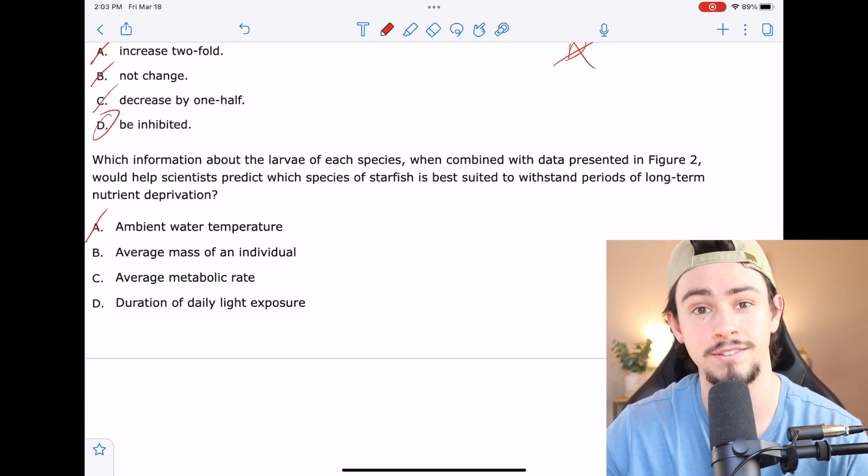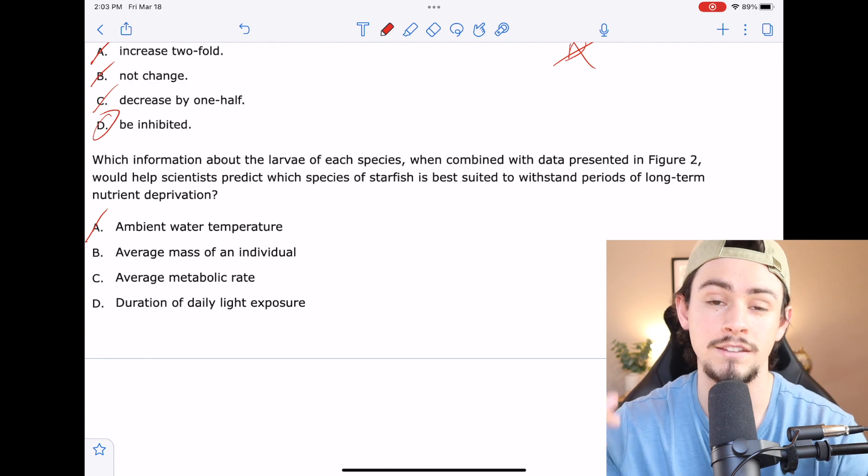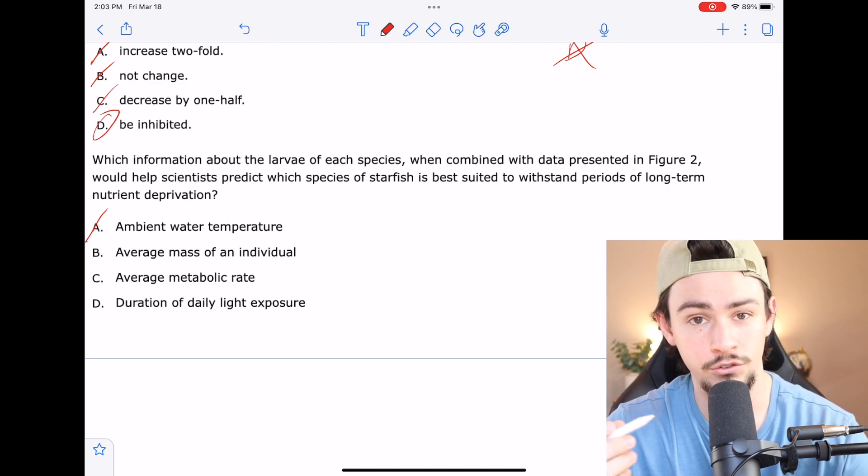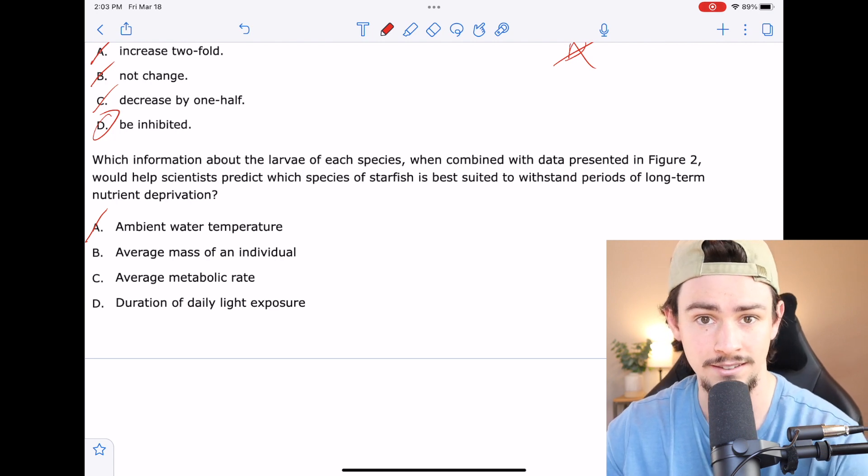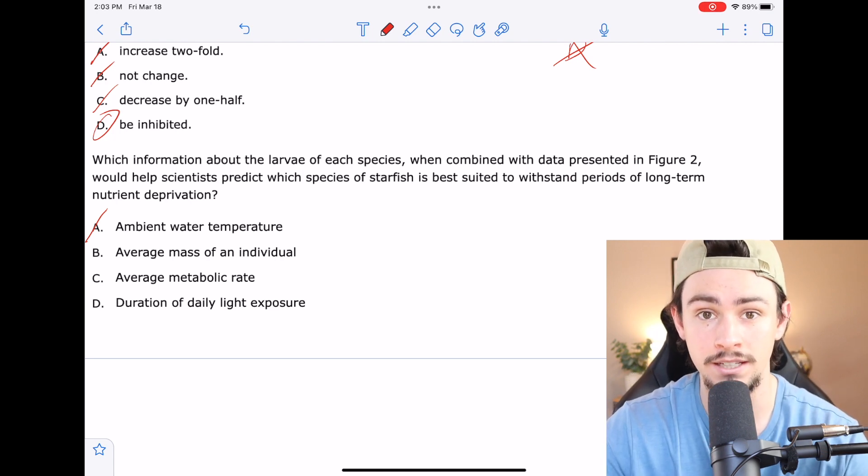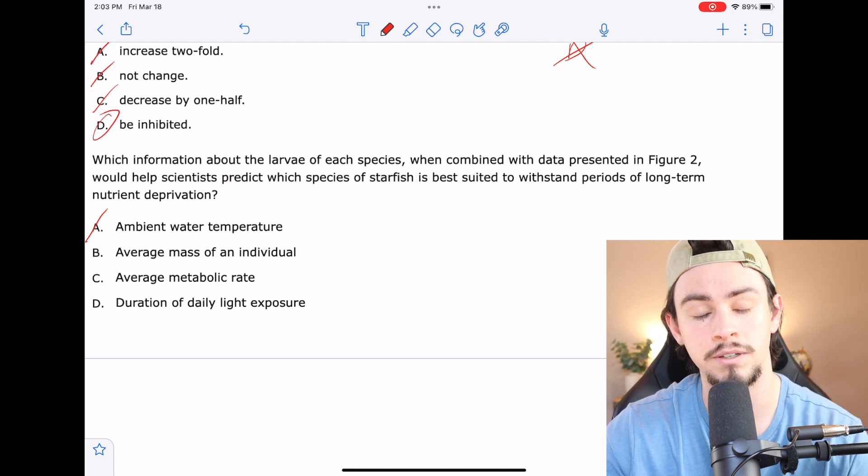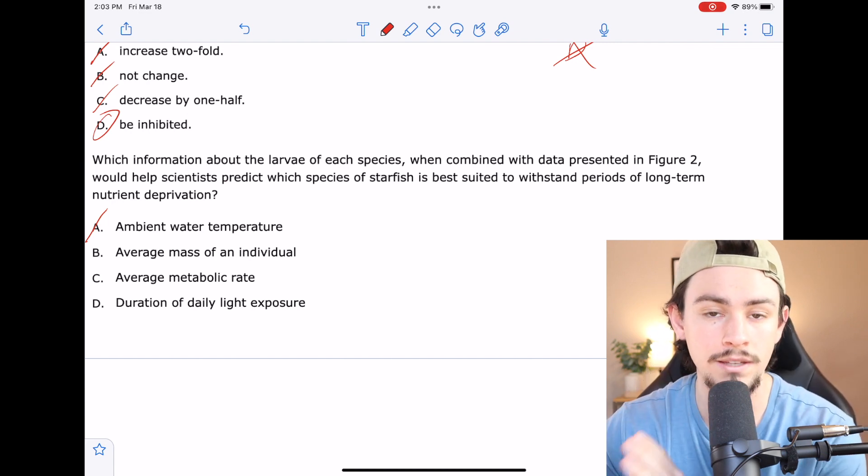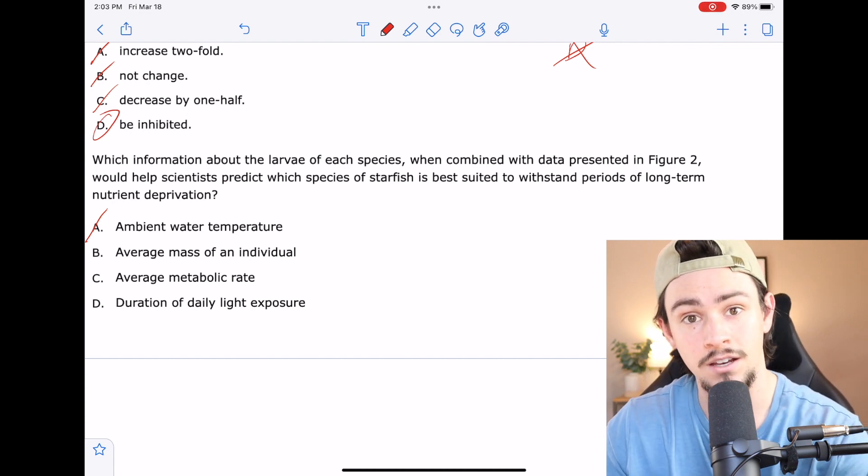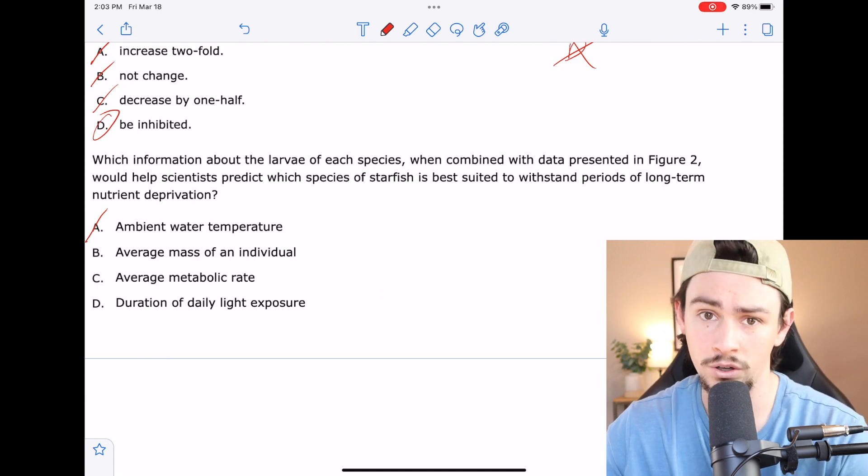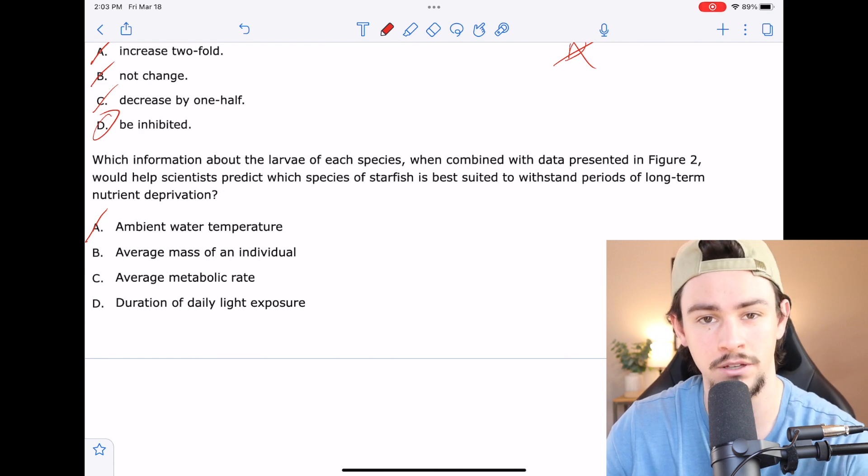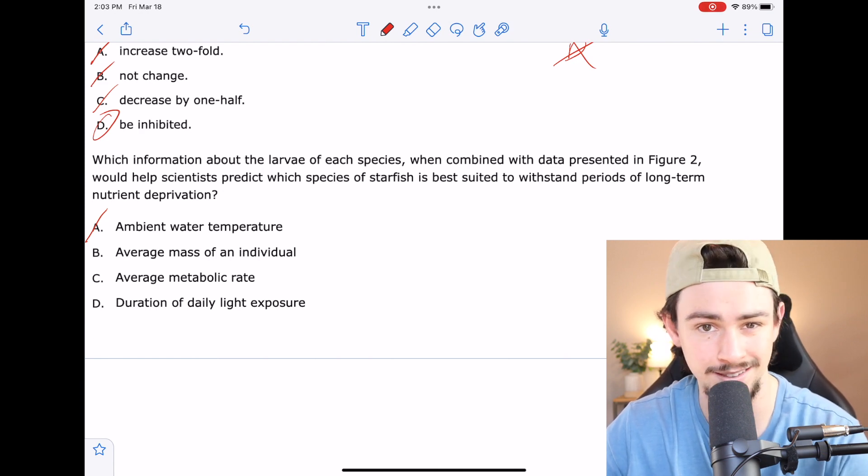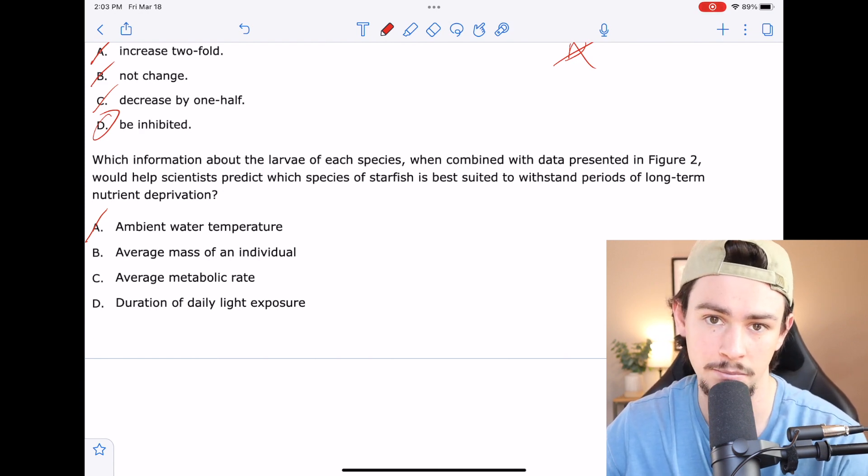They did allude to this. This is a cop-out answer choice because they talked about how the larvae were from different temperatures of water. So here, they're just trying to get you to bite on that. Even though it doesn't really answer the question, it doesn't make scientific sense. B is the average mass of an individual. I think B is attractive because when we think of one species, the different mass of an individual usually does correlate with their energy expenditure. So I'll say maybe to B, even though I'm kind of against it because we're actually cross-comparing species. So it's really not a direct comparison.